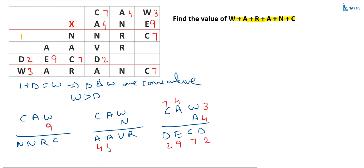A is equal to 4, and the three-digit number CAW is 7-4-3. Multiplying: 7 into 9 equals 63... Let us compute: 9 into 3 equals 27, write 7 carry 2; 9 into 4 equals 36 plus 2 equals 38, write 8 carry 3; 9 into 7 equals 63 plus 3 equals 66. All conditions are satisfied.